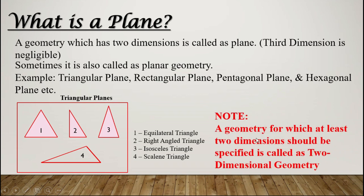An important note: a geometry for which at least two dimensions should be specified is called a two-dimensional geometry. The word 'at least' is used because for equilateral, right angle, and isosceles triangles, two dimensions are sufficient to describe them, but in the case of a scalene triangle, you need all three sides.